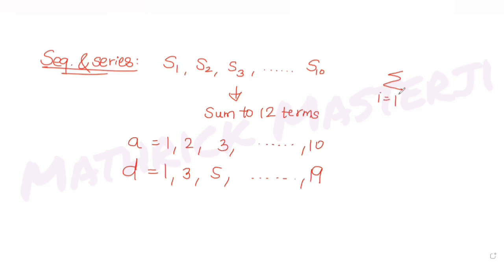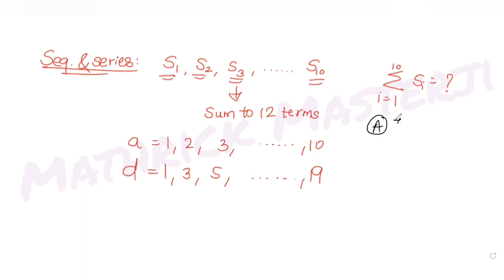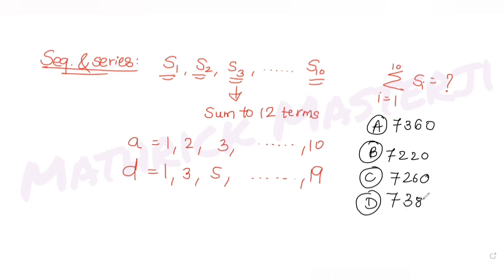The question asks us to find the summation of i equals 1 to 10 of Si. So we have to find the sum of all these 10 APs individually and then add all of those sums. The answer choices given are 7360, 7220, 7260, and 7380.